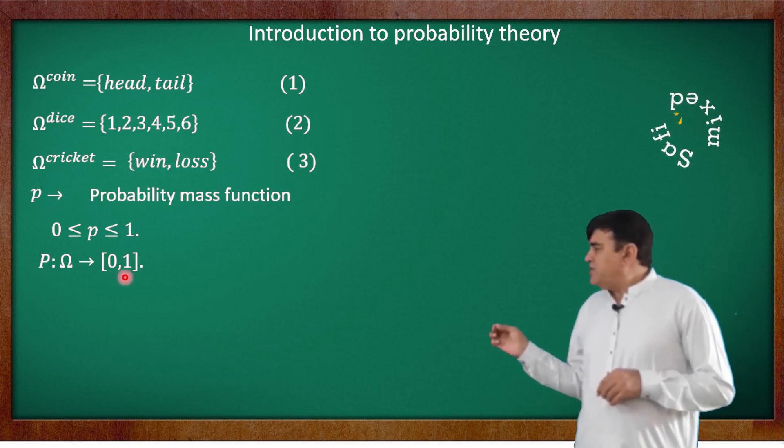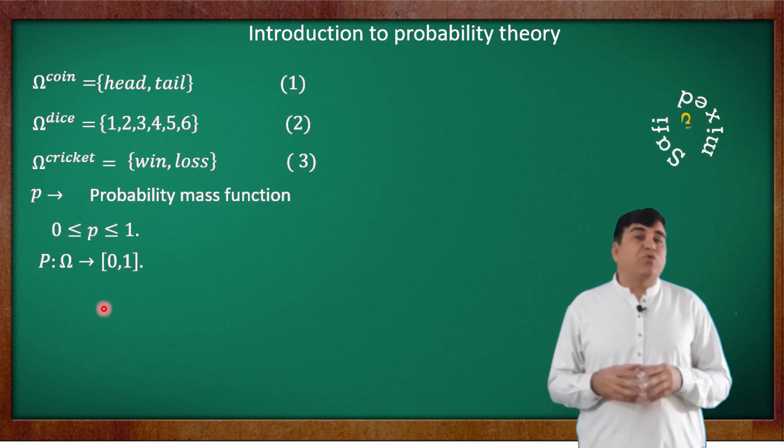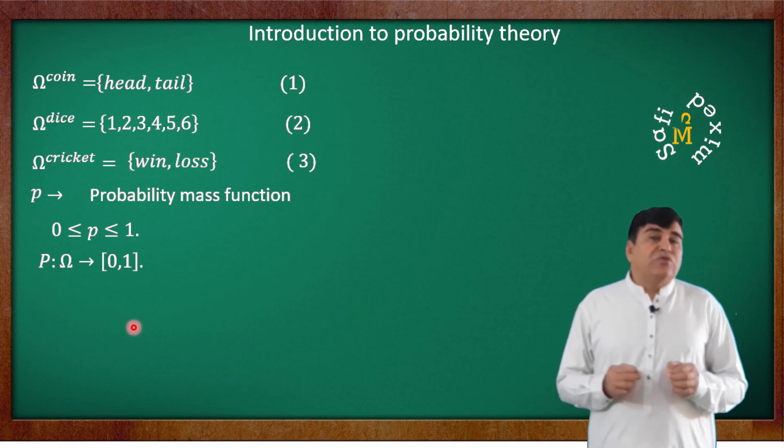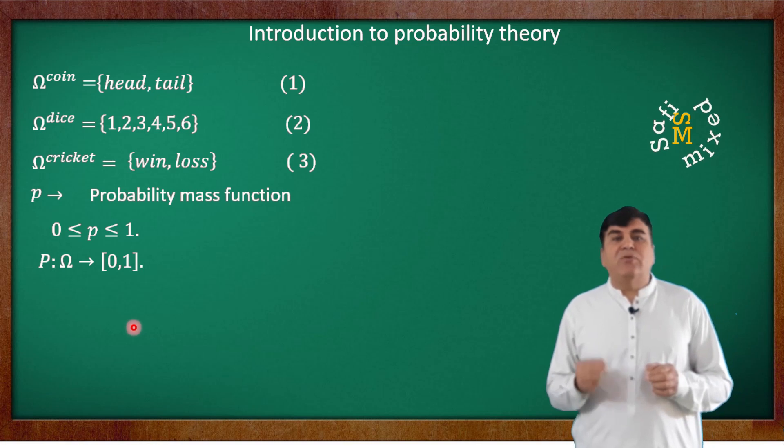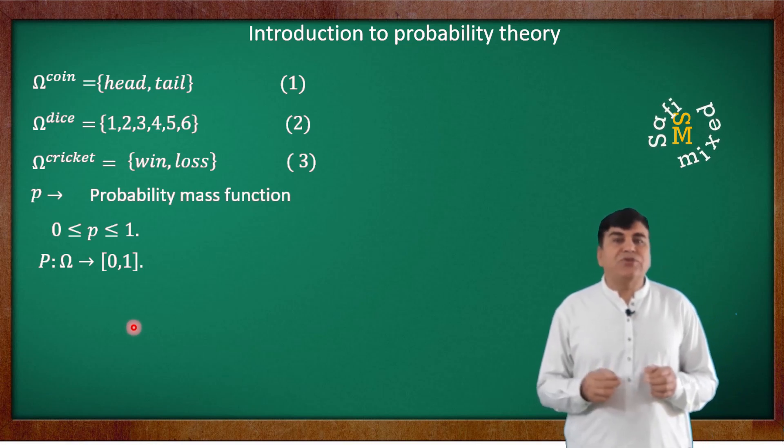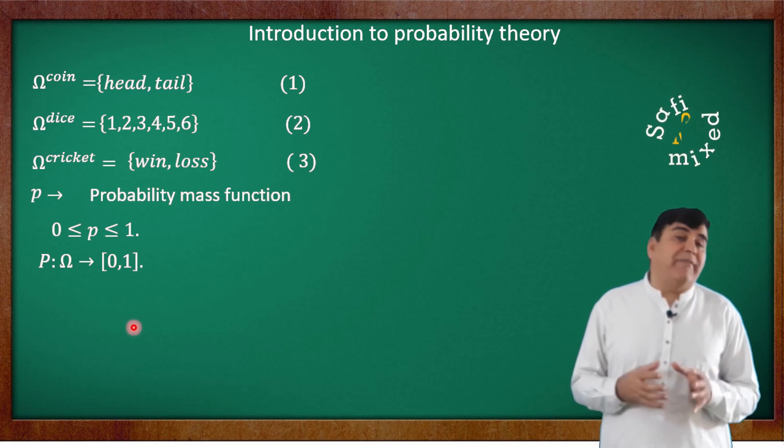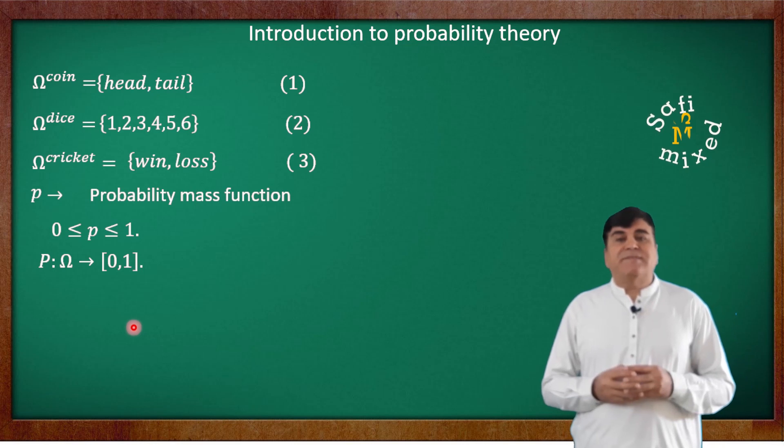This notation means that P is a weight function on space Omega that have values from 0 to 1, where the value 0 ensures the hundred percent not happening of an outcome and the value 1 ensures the hundred percent happening of an outcome of the event. This square function is also called mass function.